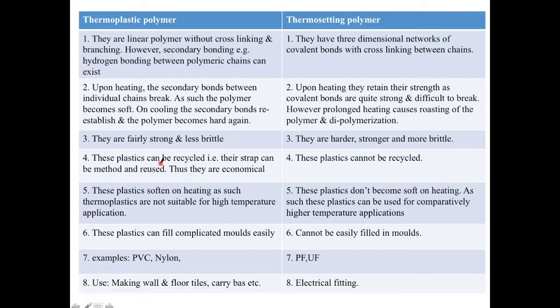Thermoplastics can be recycled and reused, making them economical, while thermosetting plastics cannot be recycled — they are only one-time use. Thermoplastics soften on heating due to high temperature applied, while thermosetting plastics cannot be remolded; they don't become soft on heating. Thermoplastics can be filled into complicated molds easily, unlike thermosetting plastics. Common examples of thermoplastics are PVC and nylon; thermosetting polymers include urea formaldehyde and phenol formaldehyde, commonly used for electrical fittings, while PVC and nylon are used for floor tiles, carry bags, etc.